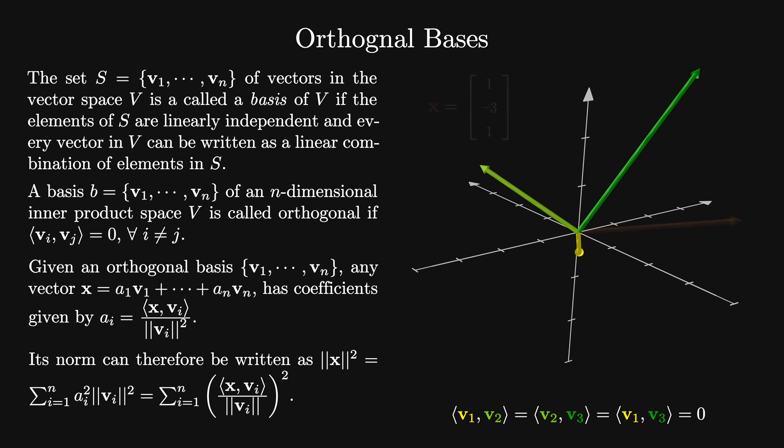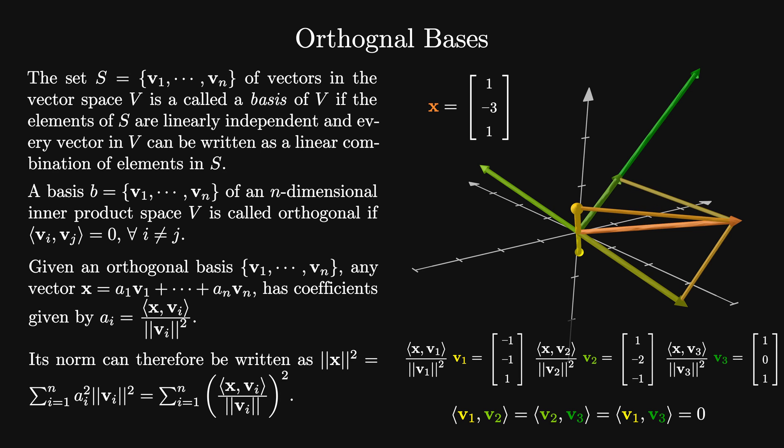For example, we can write x equals 1 minus 3 1 as a linear combination of our basis vectors v1 through v3. The component of x that's parallel to v1 is minus 1 minus 1 1. The component of x that's parallel to v2 is 1 minus 2 1, and parallel to v3 is 1 0 1. When we add those vectors together, we recover our original vector x.